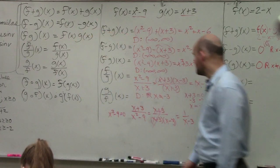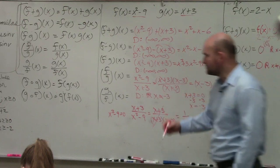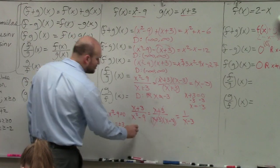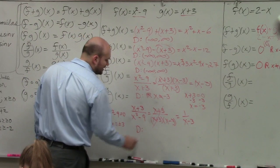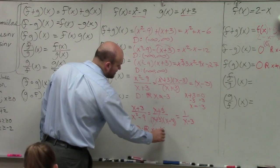So when I go ahead and do that, x squared minus 9, so I have x squared. By solving, I get x equals plus or minus 3. So my domain is going to be all real numbers, except x cannot equal plus or minus 3.